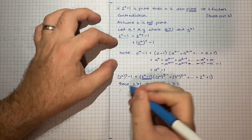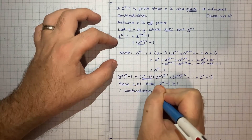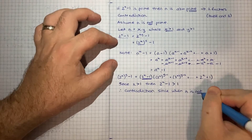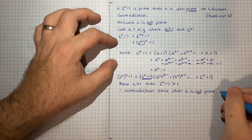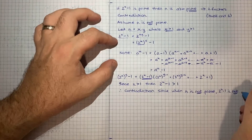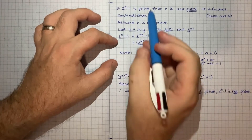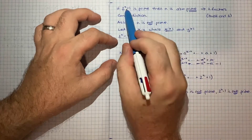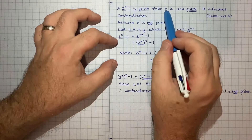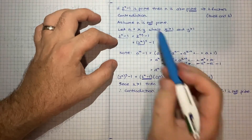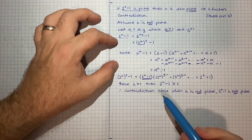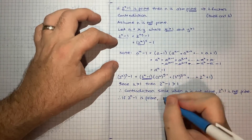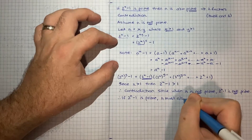Therefore we have a contradiction: when n is not prime, 2 to the n minus 1 is not prime. But we started from the premise that 2 to the n minus 1 is prime. So we've shown that if we assume n is not prime, we get a contradiction. Therefore, if 2 to the n minus 1 is prime, n must also be prime.